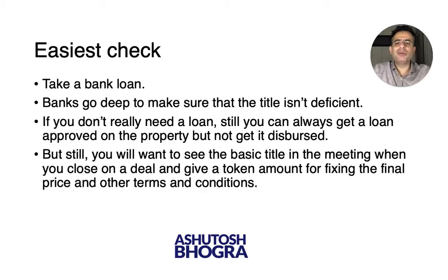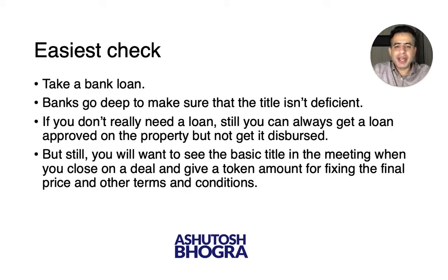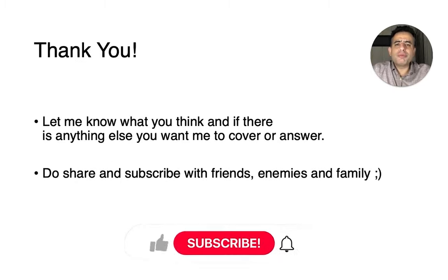The easiest check can be to take a bank loan — banks go deep into everything; they have lawyers whose job it is to check the title. If you don't even need a loan, you can get a loan approved and pay a little processing fee without disbursing it. Loans are relatively affordable at around seven to eight percent interest. But still, you want to see the basic title chain in the meeting when you close a deal and give a token amount — you should be able to see a little bit and confirm the title is in order.